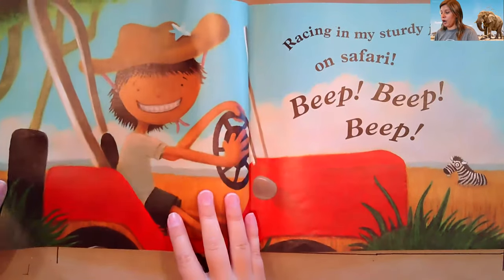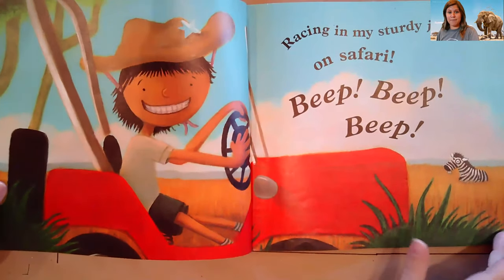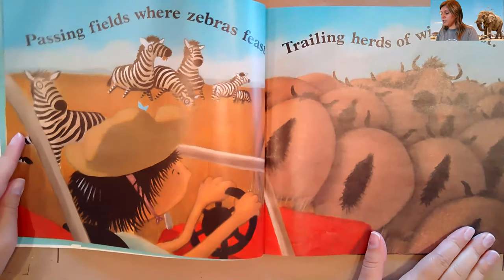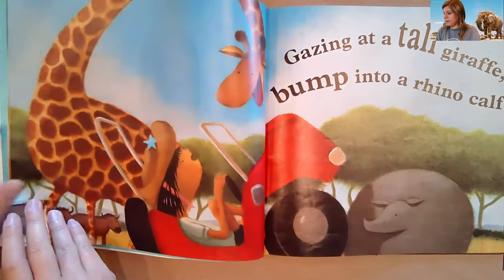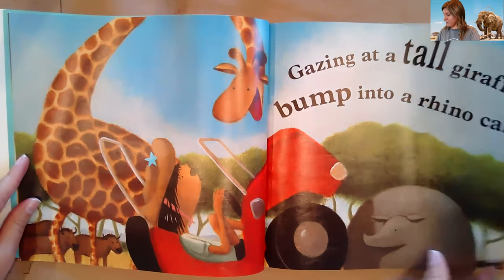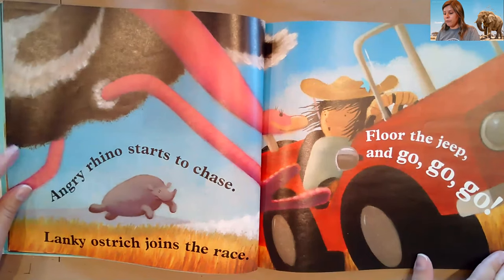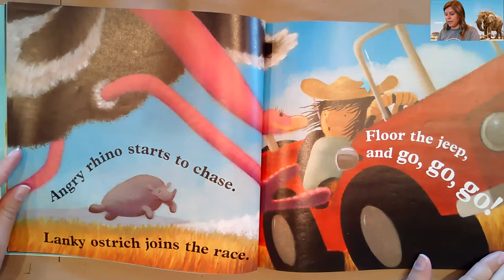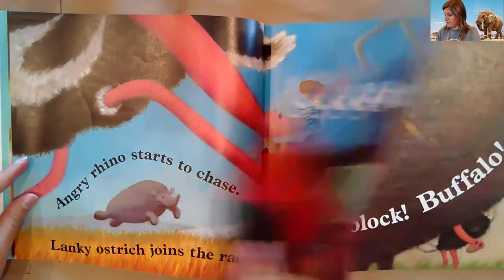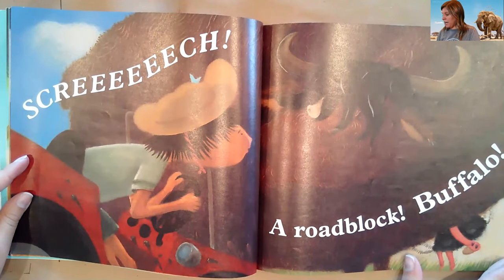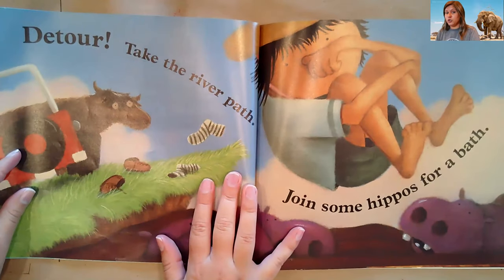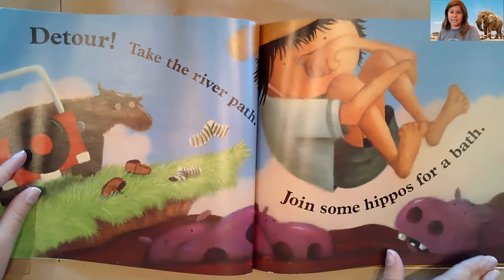Racing in my sturdy Jeep on Safari. Beep, beep, beep. Passing fields where zebras feast, trailing herds of wildebeest. Gazing at a tall giraffe, bump into a rhino calf. Angry rhino starts to chase. Lanky ostrich joins the race. Floor the Jeep and go, go, go. Screech! A roadblock. A buffalo. Detour. Take the river path. Join some hippos for a bath.